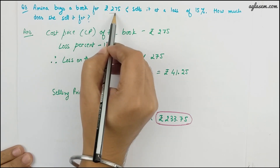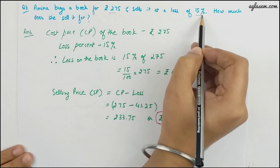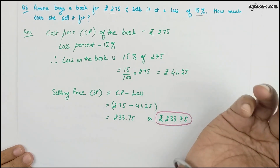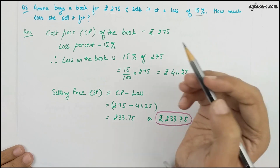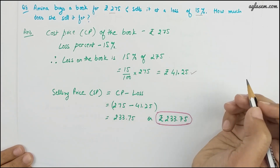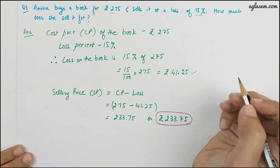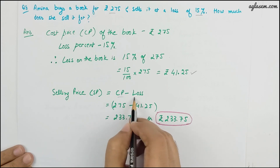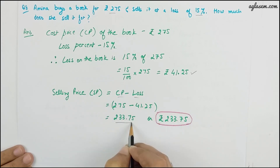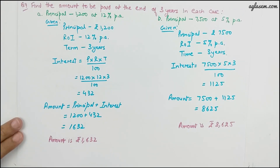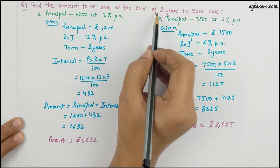Question 8: Amina buys a book for 275 rupees and sells it at a loss of 15 percent. Loss is 15 percent of 275, which is 41.25 rupees. Selling price is cost price minus loss, so 275 minus 41.25 gives 233.75 rupees as the price she sells the book for.